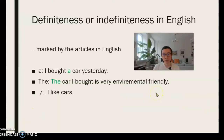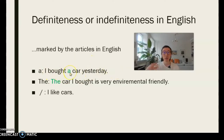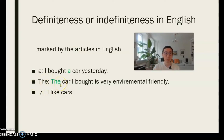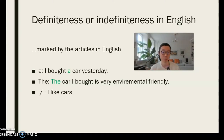In English, the definiteness or indefiniteness is marked by the articles. There are three articles to mark definiteness. One of them is 'a' — for example, 'I bought a car yesterday.' Here 'a car' is indefinite, meaning this is something new, so you use 'a car' rather than 'the car.' You use the article 'the' to present definiteness — for example, 'The car I bought is very environmentally friendly.' Now you're referring to the car you've bought, the specific one. You use the definite form to say this is something special you'd like to mention.